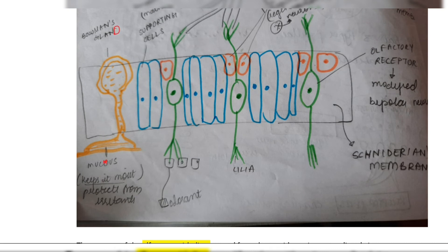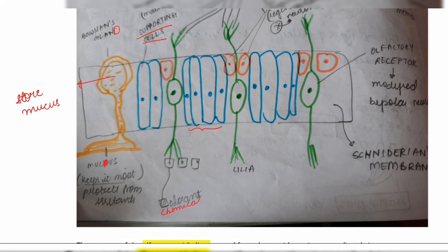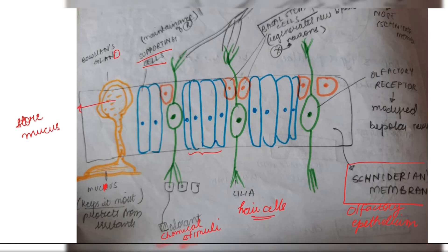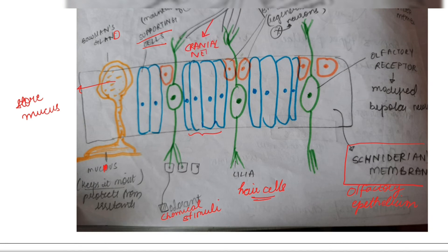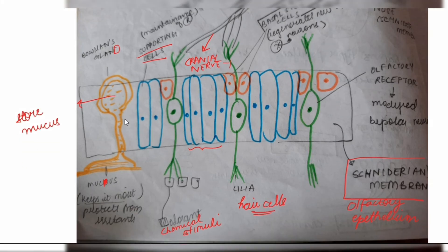To recap quickly: the olfactory epithelium contains three cell types — Bowman's gland, which keeps it moist and protected from irritants; supporting cells; and hair cells. There are also special basal stem cells, marked in red in the diagram, which regenerate neurons. Normally neurons cannot divide and regenerate themselves, but here there is an exception — in the Schneiderian membrane, basal stem cells regenerate new bipolar neurons.